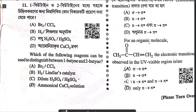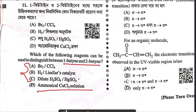Question eleven asks which reagent can distinguish between 1-butyne and 2-butyne — this is related to the acidity of alkynes. The only possible option is cupric chloride, because both 1-butyne and 2-butyne react with bromine in CCl4, and with mercuration-demercuration. However, when 1-butyne reacts with cupric chloride it forms a red precipitate of copper acetylide, but 2-butyne will not react. So the answer is option D.